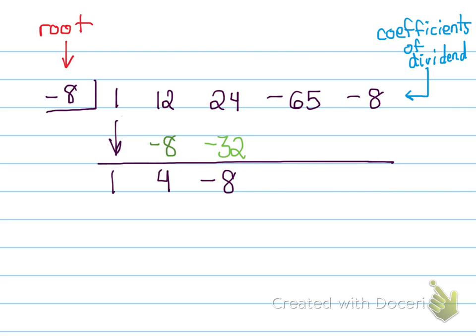Now I'm going to multiply that negative 8 times my root. Negative 8 times negative 8 gives me positive 64. So I'm going to write positive 64 under the next coefficient. Then I'm going to add straight down. Negative 65 plus positive 64 equals negative 1.